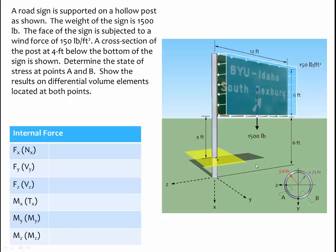The first step in solving a combined loading problem is to determine the internal forces at the cross-section of interest. In a three-dimensional problem, there can be three internal resultant forces: a normal force along the axis (in our case the x-axis), and two shear forces in the y- and z-directions acting parallel to the face. There can also be three internal moments: a moment about the x-axis is a torque, while moments about the y- and z-axes result from bending about those two axes.